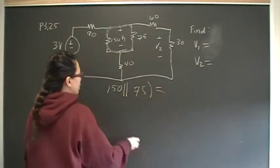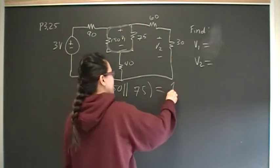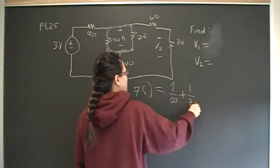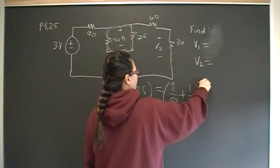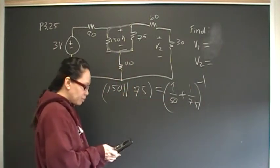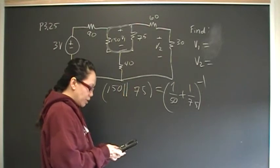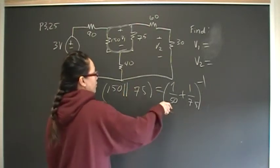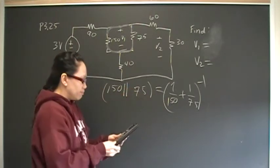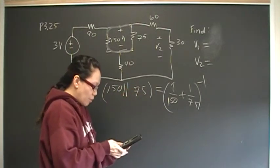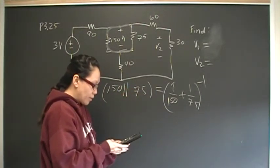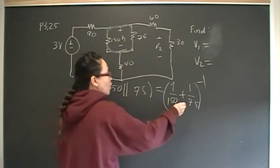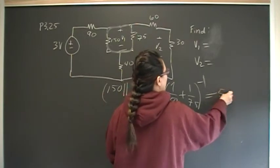What I'm going to do is simplify that. So that's going to be 1 over 50 plus 1 over 75 inverse, and 1 divided by 50 plus 1 divided by 75 inverse. And that's going to be, all of that is really 50.